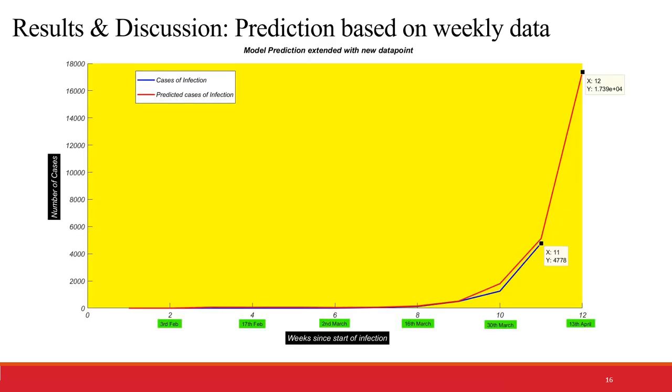The prediction of COVID-19 cases using weekly confirmed case data available for the country of India is shown in the graph. The blue line is actual cases of infection reported, and the red is predicted using the SIR model. As we can see, on 6th April, the actual cases and predicted cases are very close. On the basis of data available till 6th April, according to the SIR model, the number of cases on 13th April is as shown in the graph - that is, 17,400.